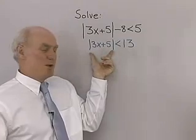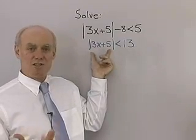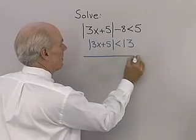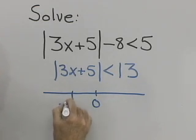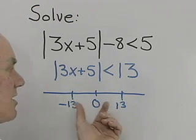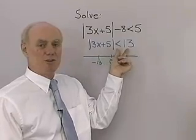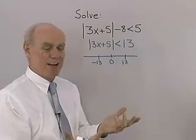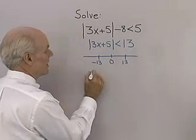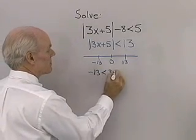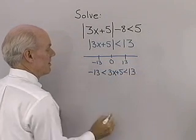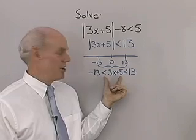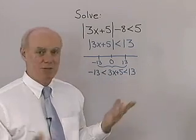The absolute value of 3x plus 5 is its distance from 0 on the number line, and this expression tells me that distance is less than 13 units. Drawing a number line with 0, negative 13, and positive 13, the expression 3x plus 5 must be between negative 13 and positive 13. I can write that as the continued inequality: negative 13 less than 3x plus 5 less than positive 13.